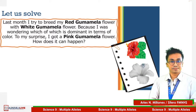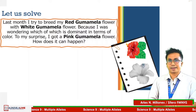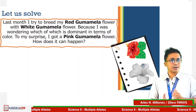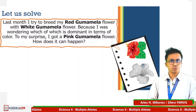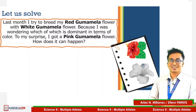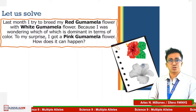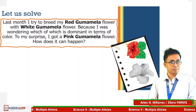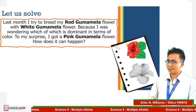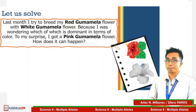Let us try to solve some problems under incomplete and co-dominance. Problem number one: last month, I tried to breed my red gumamela flower with a white gumamela flower, because I was wondering which is dominant in terms of color. To my surprise, I got a pink gumamela flower. Is it possible to obtain a different trait from its parents — red, white, pink? In genetics, it is an example of incomplete dominance.